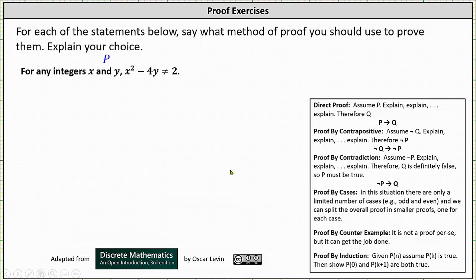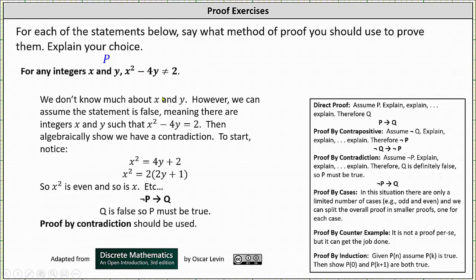And for the third example, for any integers x and y, x² - 4y ≠ 2. Notice here we just have a statement p. We don't know much about x and y. However, we can assume the statement is false, meaning we can assume not p, which means there are integers x and y such that x² - 4y = 2. Then algebraically show we have a contradiction.